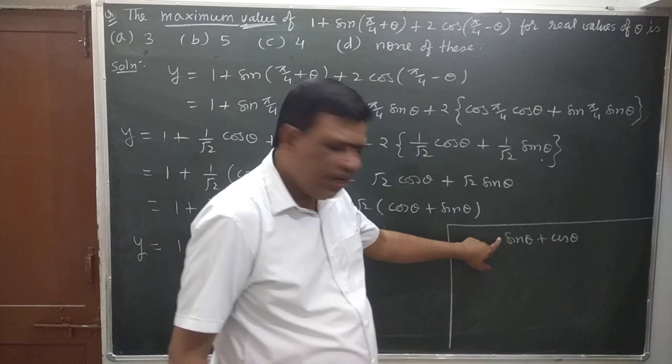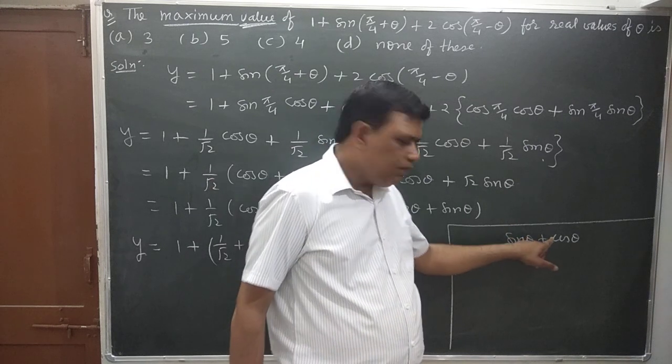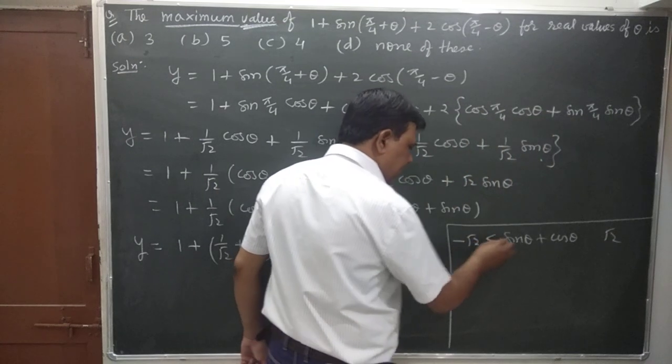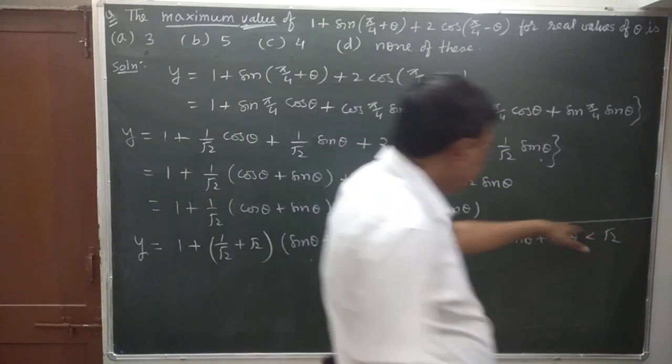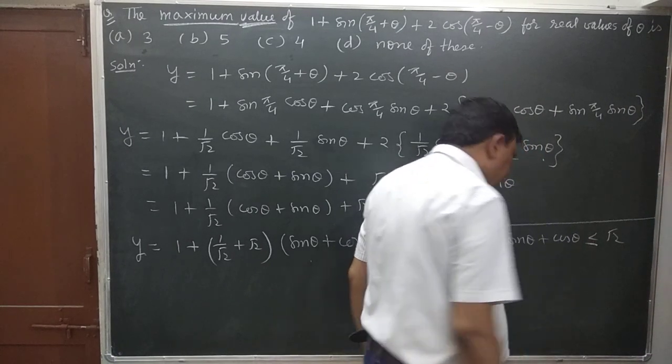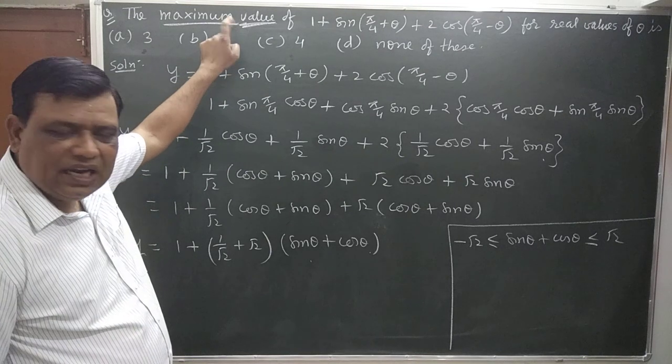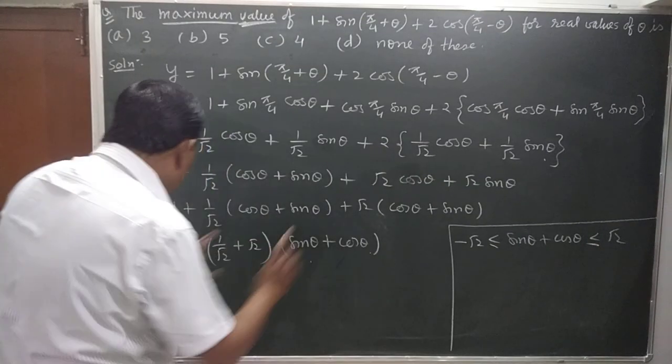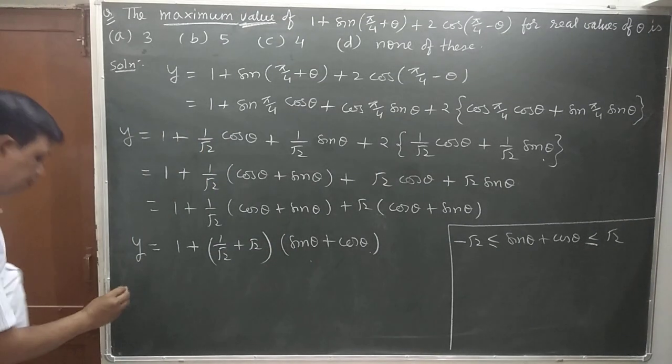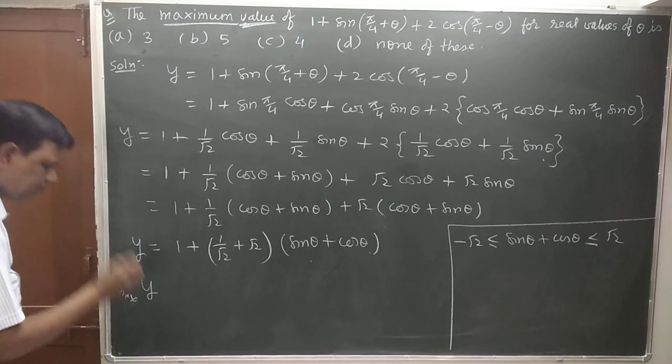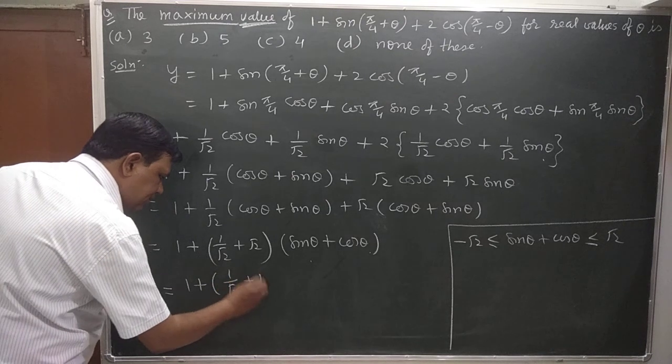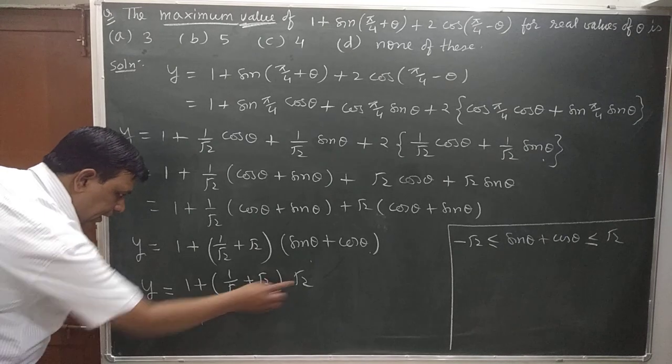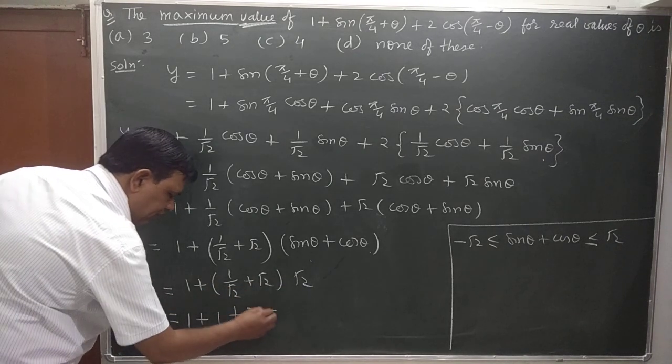Now the maximum value here is √2. So y maximum = 1 plus (1/√2) plus √2. Solving, √2 and √2 gives 4.